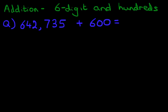We're going to do this using the vertical format. So the first stage is to rewrite this question in columns in the vertical format. So let's do that. We'll just come here and we'll change the color. Here we've got six hundred and forty-two thousand seven hundred and thirty-five plus six hundred.